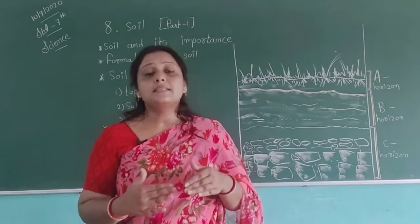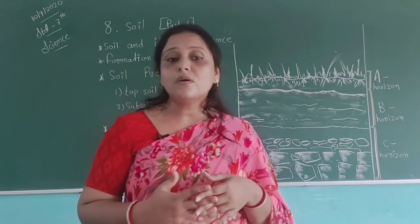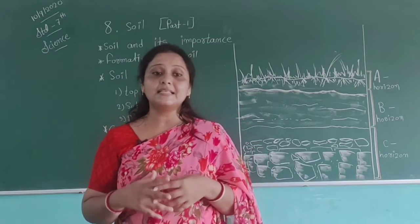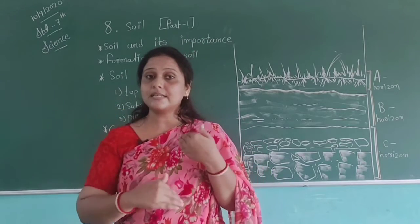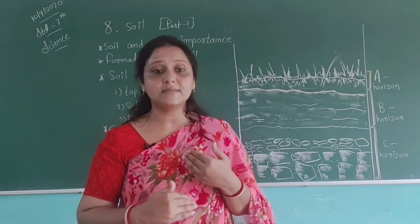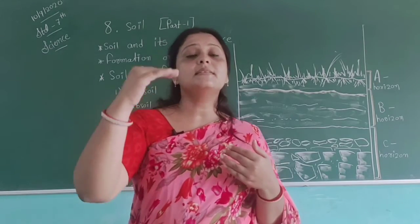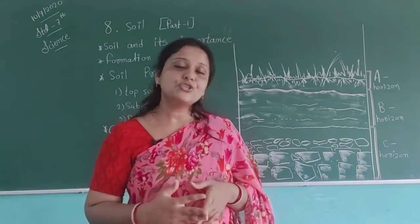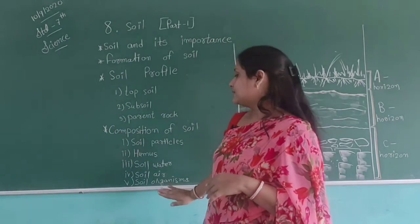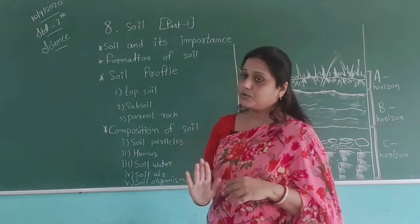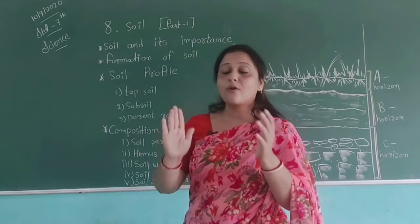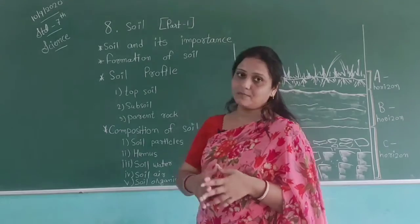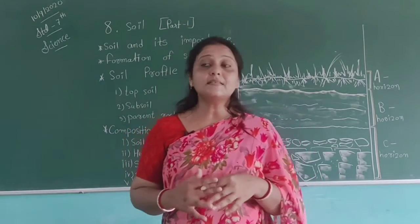Using this table, we can see that clay particles have the smallest size, then silt, then sand, and the biggest is gravel or stone. So soil particles are also very useful in understanding the composition of soil.